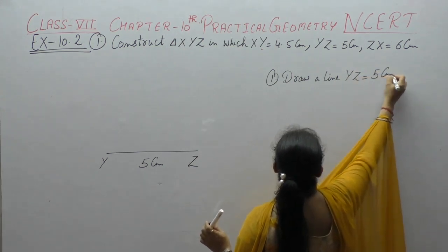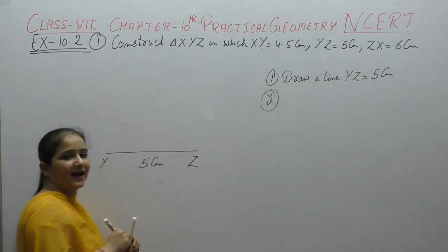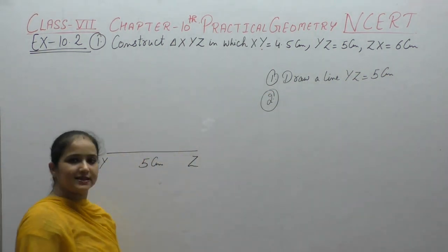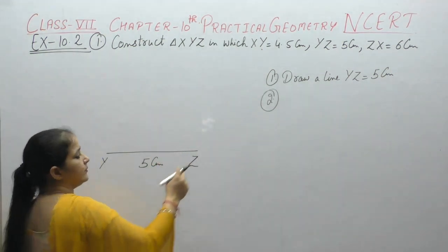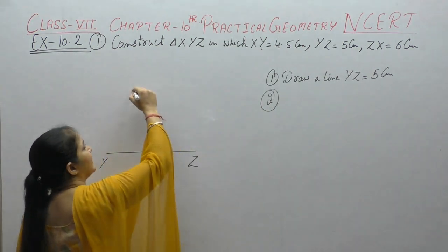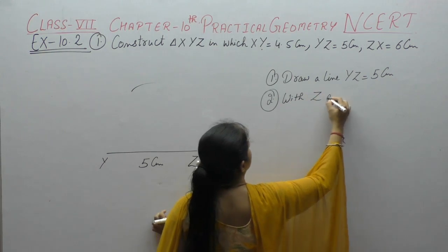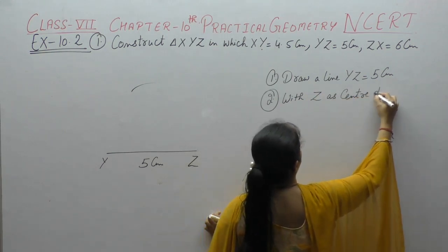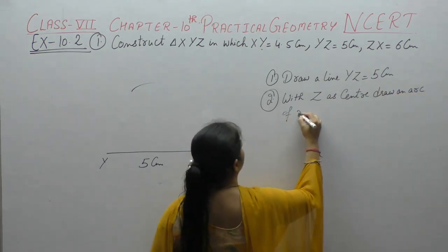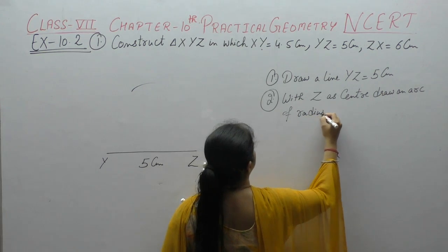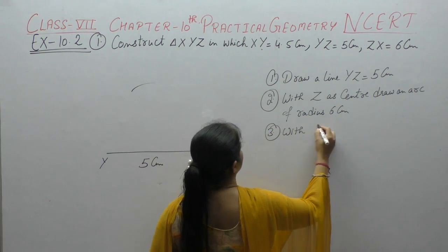YX has 4.5 cm and ZX has 6 cm. With Z as center, draw an arc of radius 6 cm.